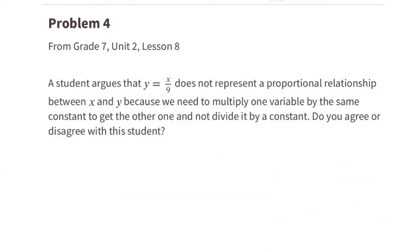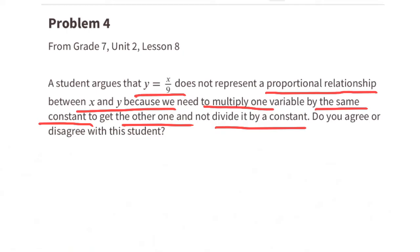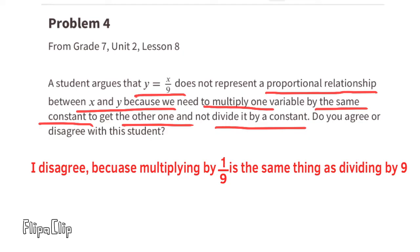Problem 4 (from unit 2 lesson 8): a student argues that y equals x over 9 does not represent a proportional relationship because we need to multiply one variable by the same constant to get the other, not divide by a constant. Do you agree or disagree? I disagree, because multiplying by one-ninth is the same thing as dividing by nine. So y equals x divided by 9 is the same as y equals one-ninth times x.